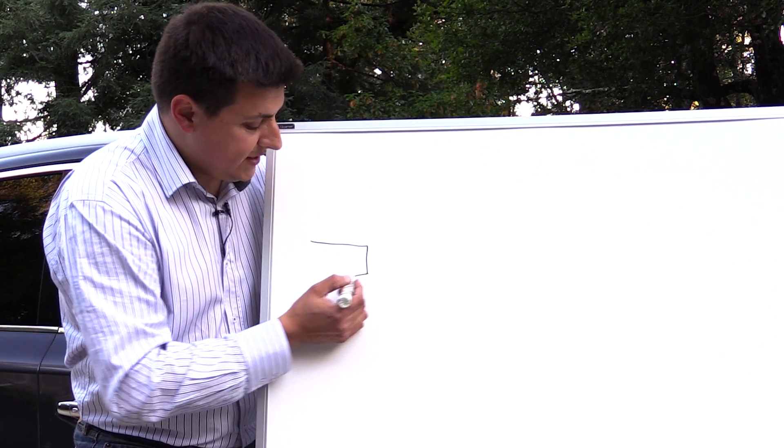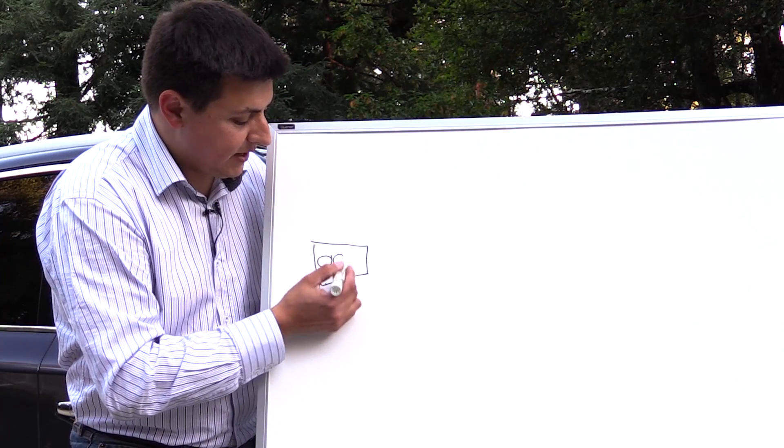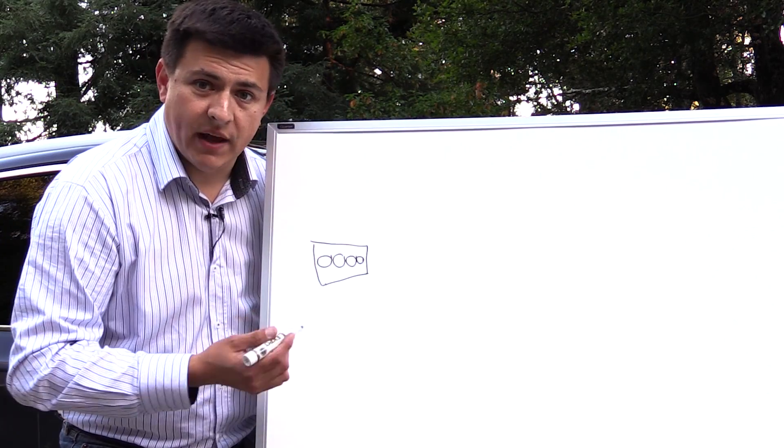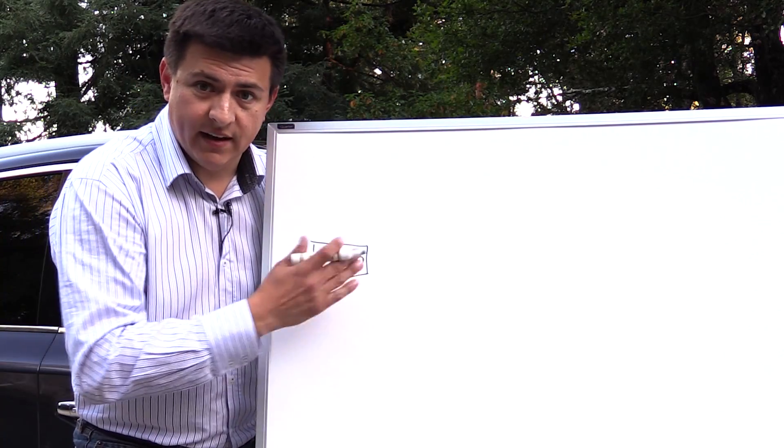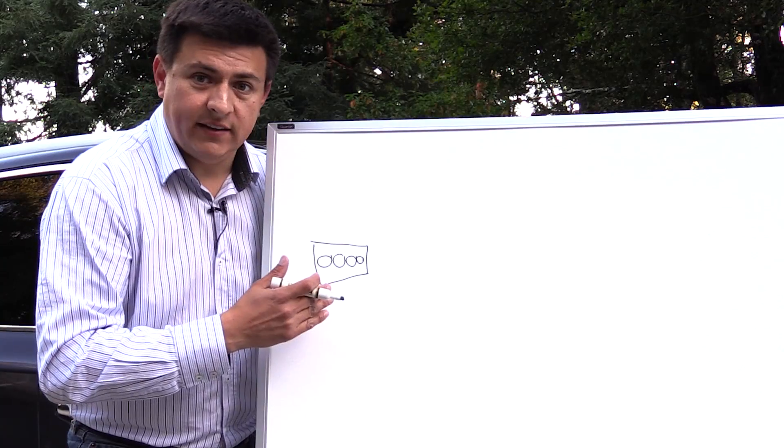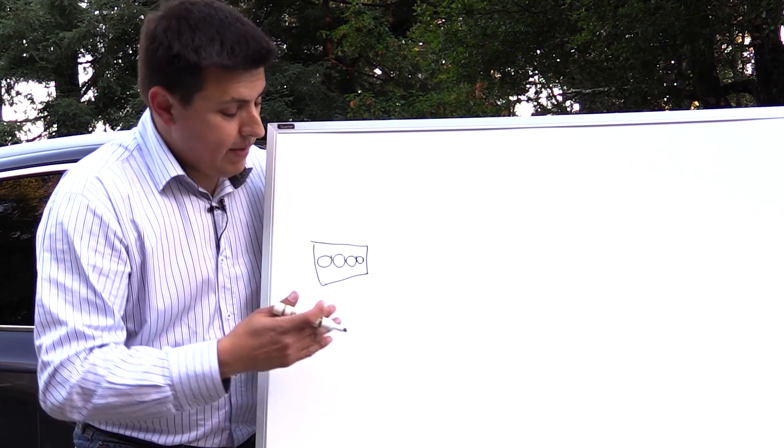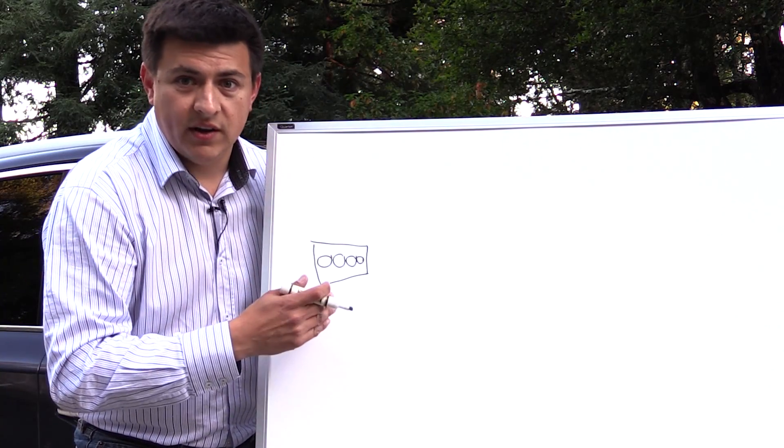Let's move over to the whiteboard because it does make certain things easier to illustrate. Now the QX60 and the Pathfinder start out with a four-cylinder Atkinson cycle engine and that's fairly standard in the hybrid world. An Atkinson cycle engine basically trades torque for efficiency.